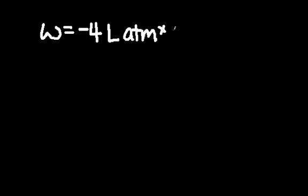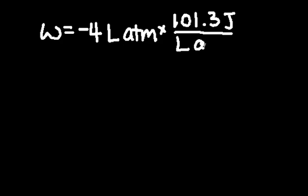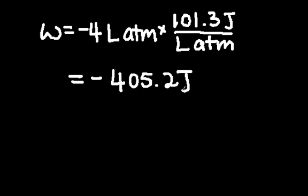Next, let's convert atm times liters into joules, which is the unit we're given for the heat energy added to the system. The work, which is equal to negative 4 L atm, can be converted into joules by multiplying by this conversion factor. This conversion factor can be figured out from the gas constant. Now, our result gives us 405.2 joules.